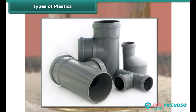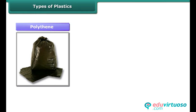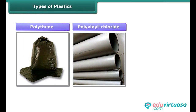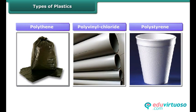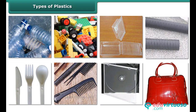Some examples of thermoplastics are polythene, polyvinyl chloride, and polystyrene. These are used in manufacturing of water pipes, drain pipes, packaging bags and bottles, toys, combs, disposable cutlery, and CD and DVD cases.